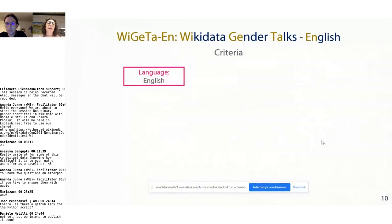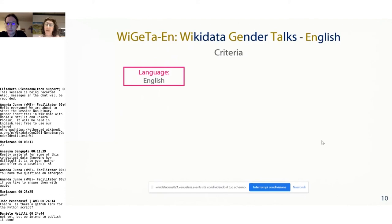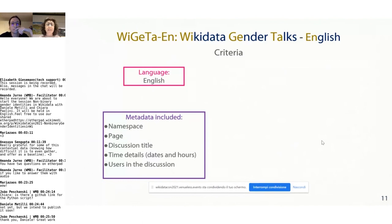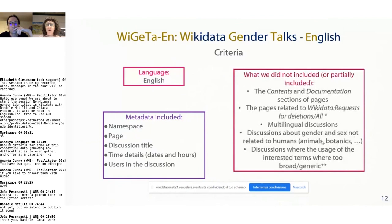Why English? This is a preliminary analysis, so we didn't want to go through all languages. We speak English but are Italian, so this is manageable for a preliminary corpus. The English Wikidata community is also the biggest, so there is more data to work on. We include metadata such as namespace, page, discussion title, time details, and users in the discussion. We excluded contents and documentation sections, multilingual discussions, and discussions where gender and sex were not related to humans — for example, when talking about animals or botany.